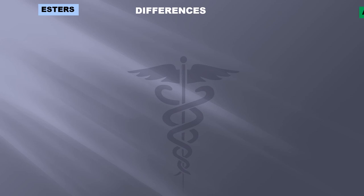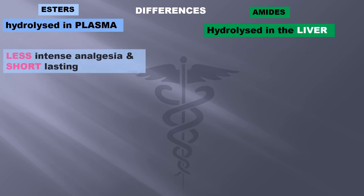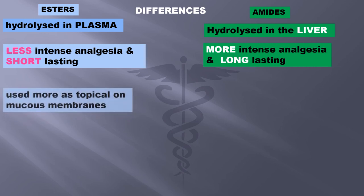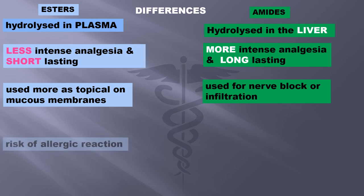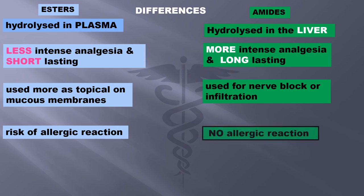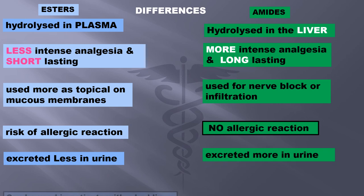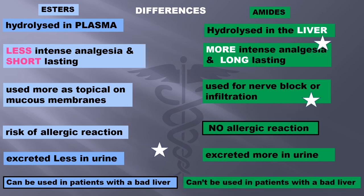Before finishing, let us have a quick look at the major differences between esters and amide local anesthetics. Amides are more intense and long-lasting; esters are used more as topical on mucous membranes while amides are used for nerve block or infiltration. There is a risk of allergic reactions with esters but not with amides. Esters are excreted less in urine, amides more. Esters can be used in patients with poor liver conditions, but amides cannot be used when liver function is impaired.